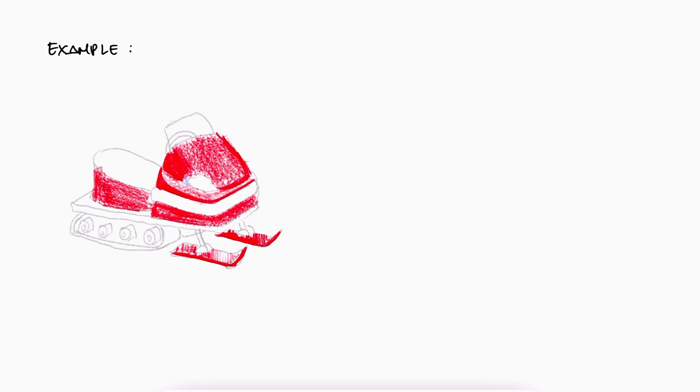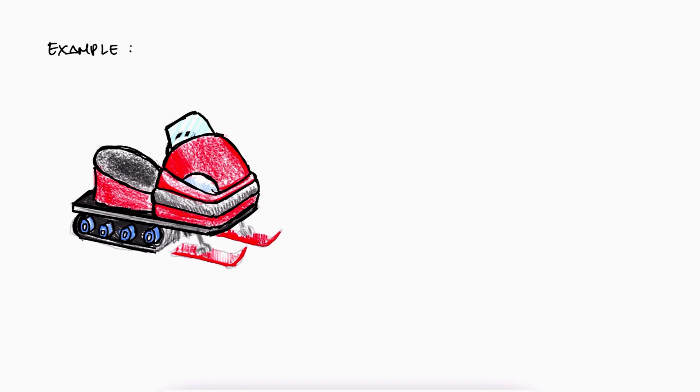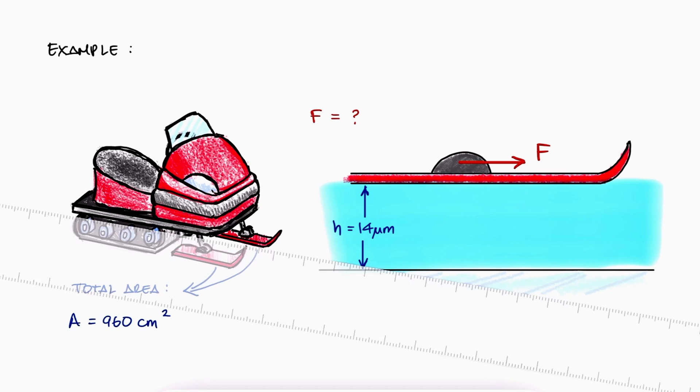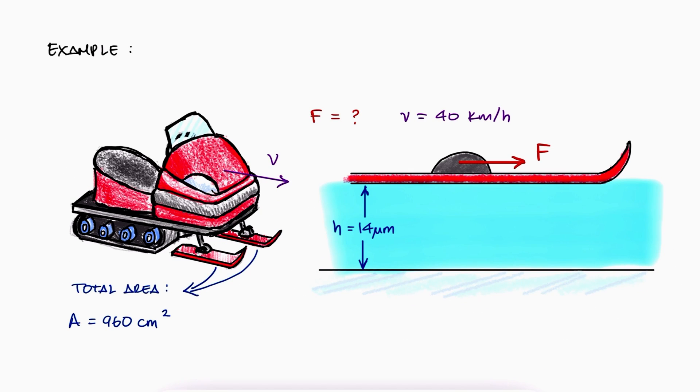Let's say there's a snowmobile that reached an area covered in ice instead of snow. Between the sleds and the ice, there's a very thin film of water 14 microns in thickness, and the total contact area between the sleds and the water is 960 cm². What is the thrust force that the snowmobile should generate to maintain a constant speed of 40 km/h?